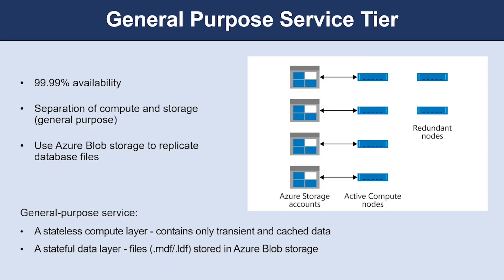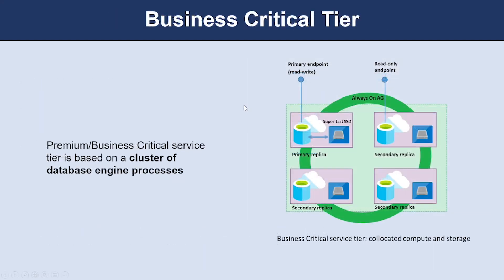In the General Purpose architectural model there are two layers: a stateless compute layer and a stateful data layer. The stateless compute layer runs the SQL Server .exe process and contains only transient and cached data; this stateless node is operated by Azure Service Fabric. The stateful data layer stores database files in Azure Blob Storage, which guarantees there will be no data loss for any record placed in any database file.